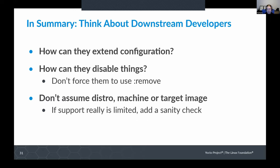To summarize everything: think about downstream developers — people who are using your layers. Think about how they can extend your configuration, how they can build on top of what you've done, and how they can disable things you've done, because sometimes they will need to do that. Just as you shouldn't use remove, try not to do things in a way that forces people using your layer to use remove to disable things. Make things configurable. Don't assume the distro, the machine, or the target image being built. If you really have limited support, add a check as discussed earlier.